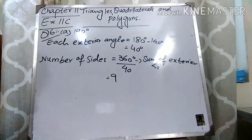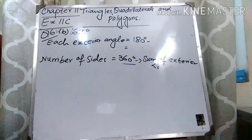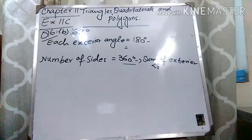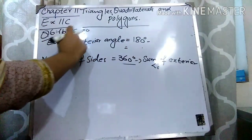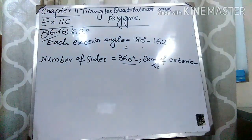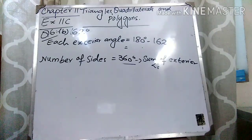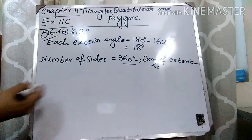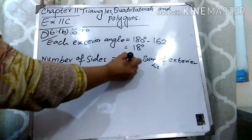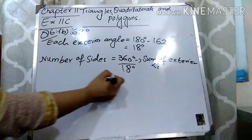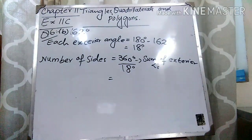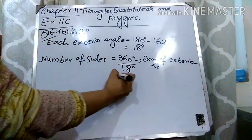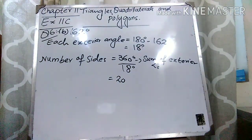Now let's come to Part B, which is 162°. Each interior angle is 162°. Find each exterior angle by subtracting from 180°: 180° minus 162° gives 18°. As the sum of exterior angles equals 360°, we divide 360 by 18, and we get 20. So the polygon has 20 sides.